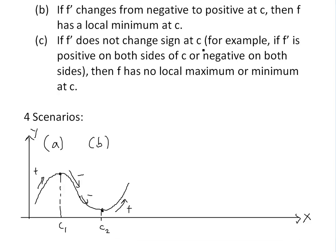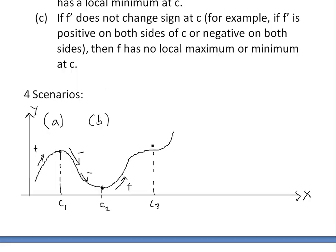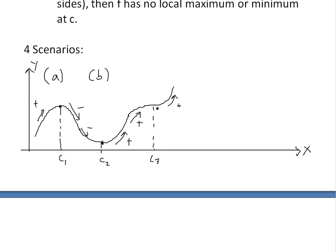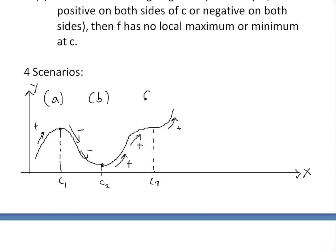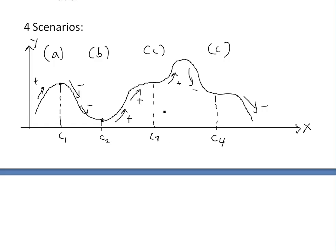The next case is if the derivative does not change sign at c. For example, here it's positive, goes to zero, and then goes back up — so this is critical number c3. To the left and right of c3, the derivative is positive, so this has no local max or min because there's no curvature down or up. This is case C. Another version of C is if you're going down, hit a slope of zero, and go back down — that's c4. The derivative is negative on both sides, so it's also case C. Both of these are case C.